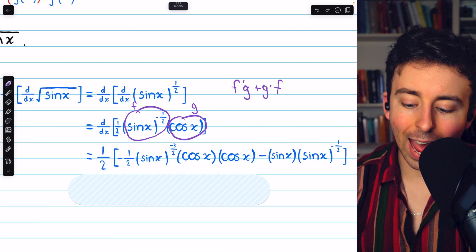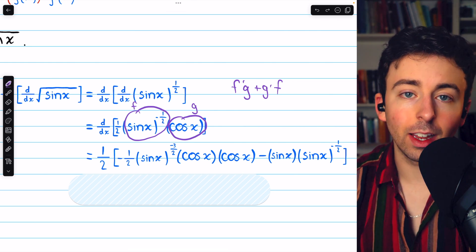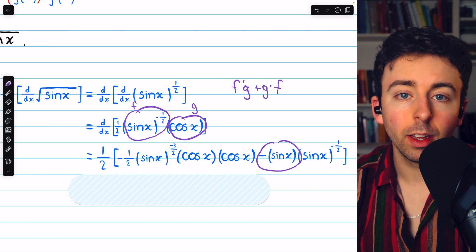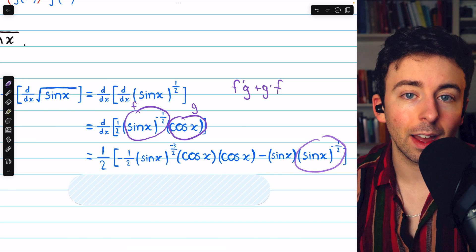Then we have to add g prime f. If g is cosine, then g prime is negative sine, and then we just multiply that by f, which is sine x to the negative half.